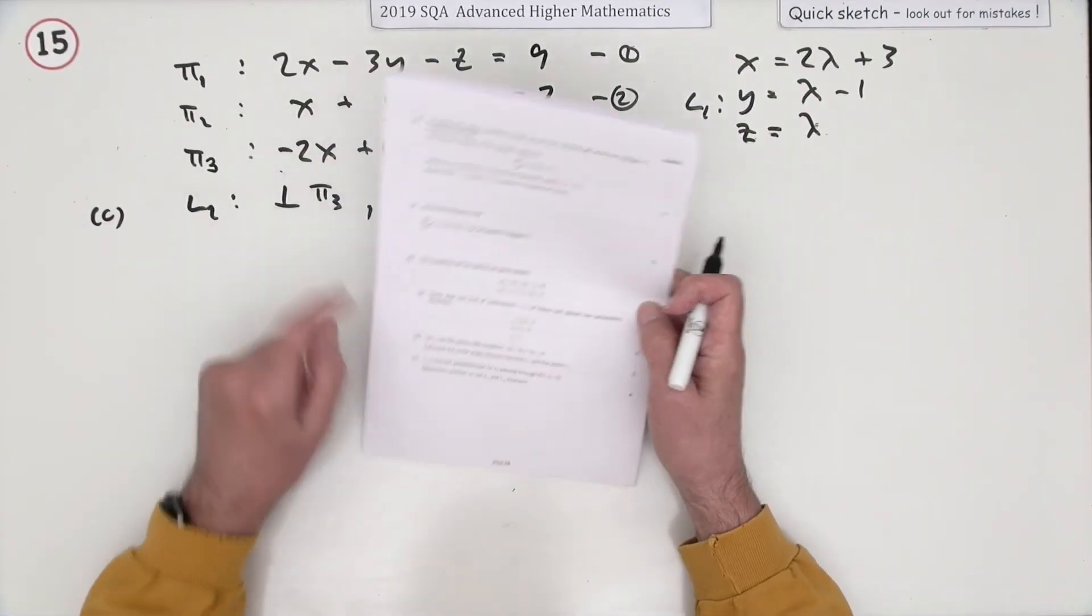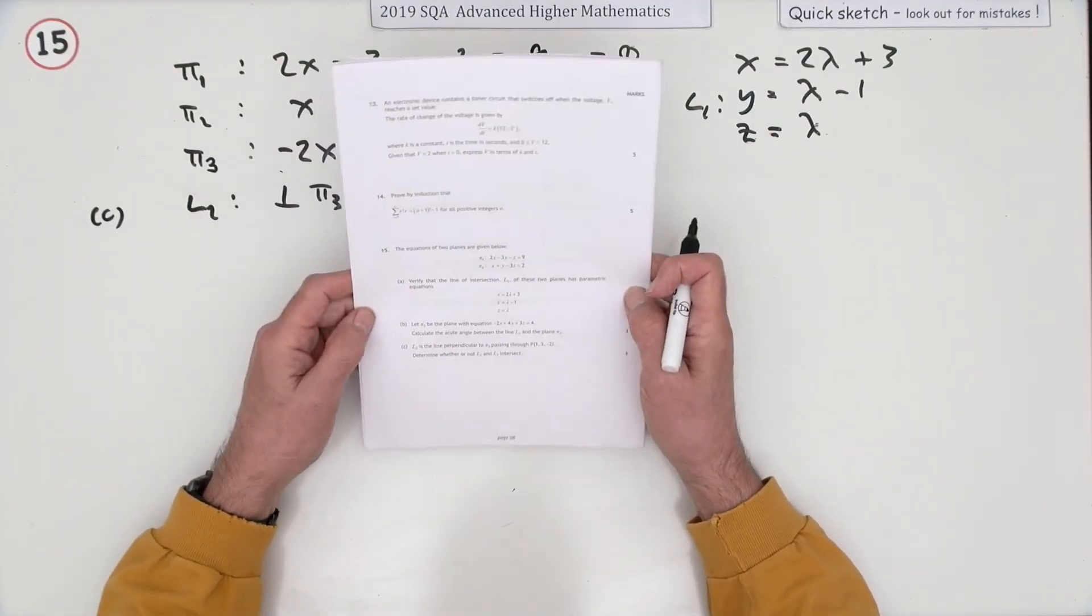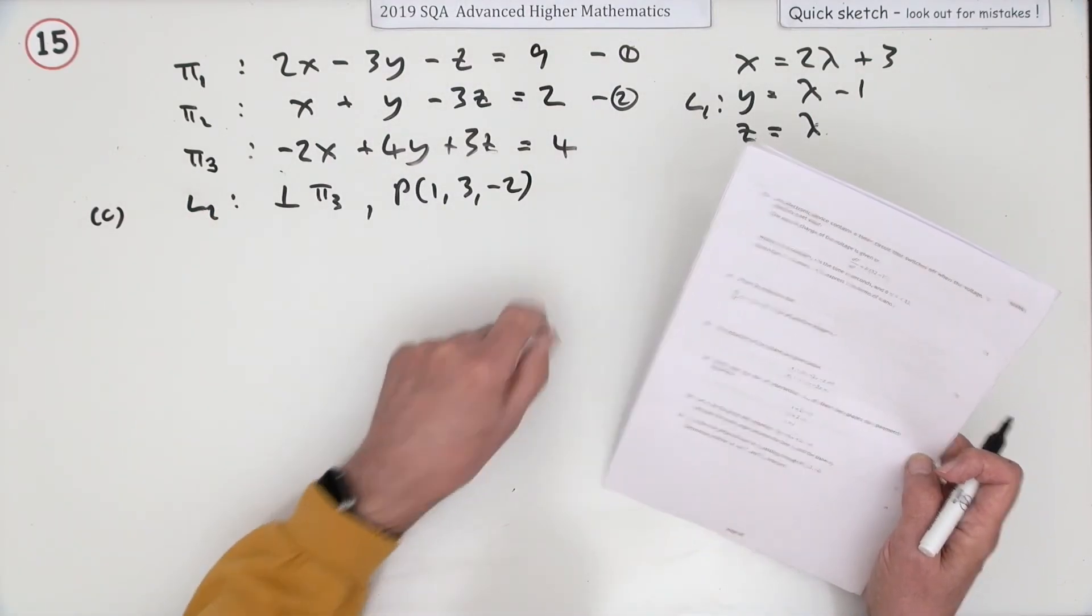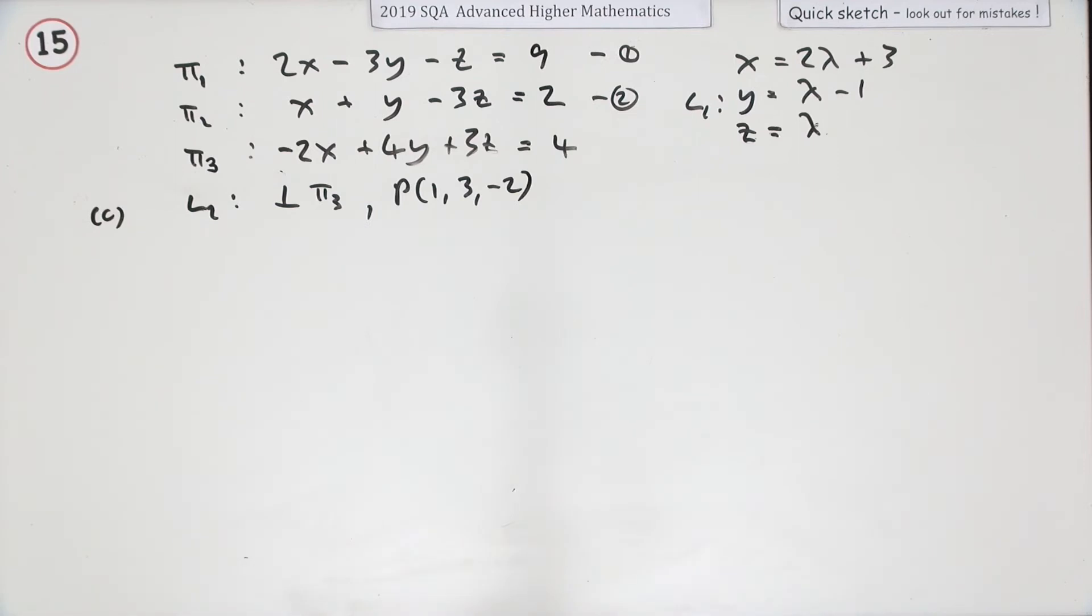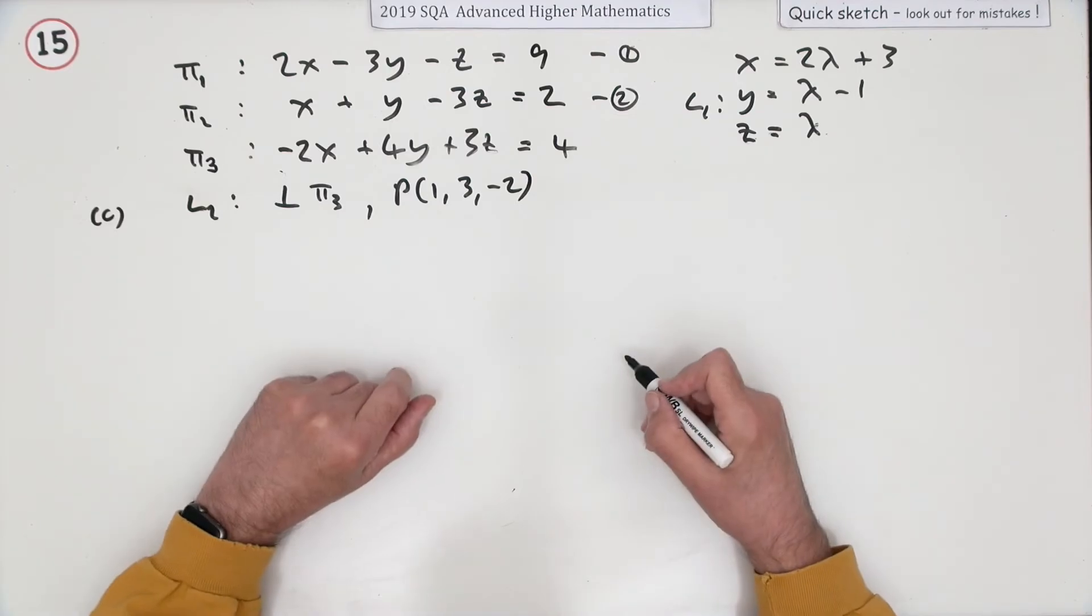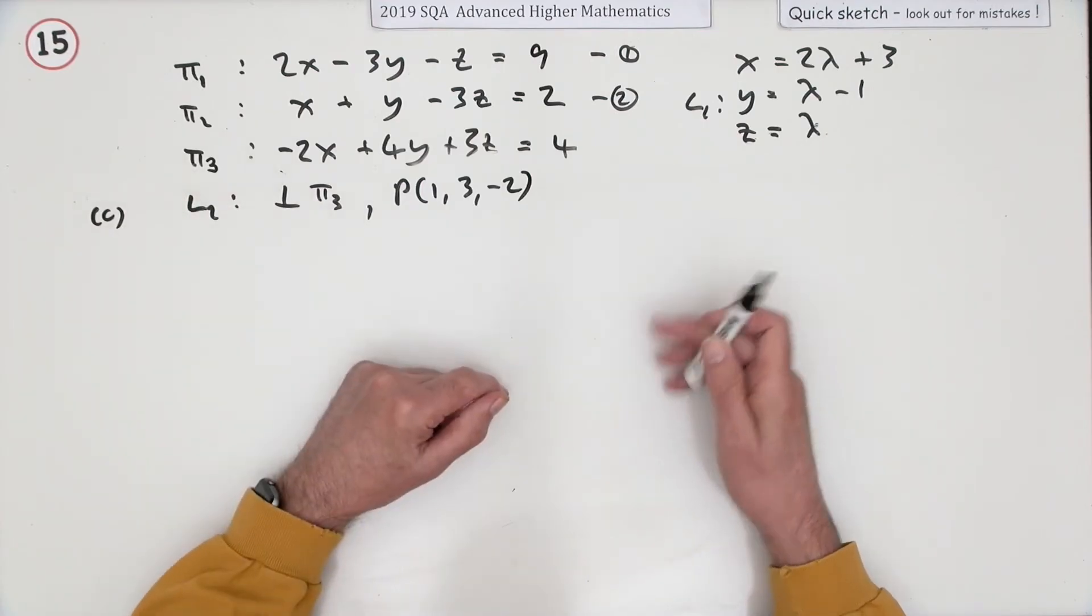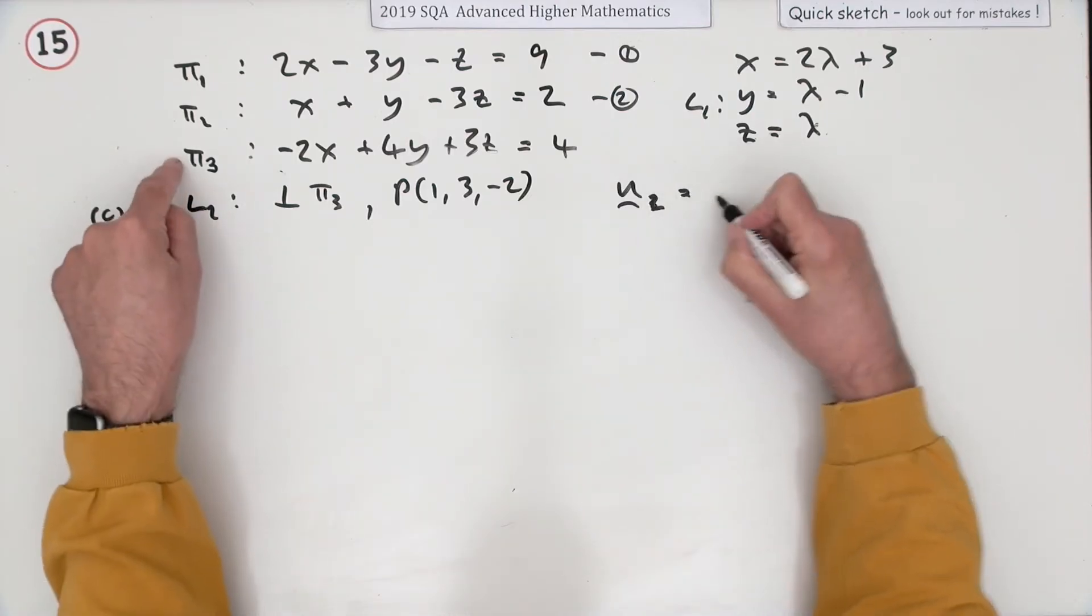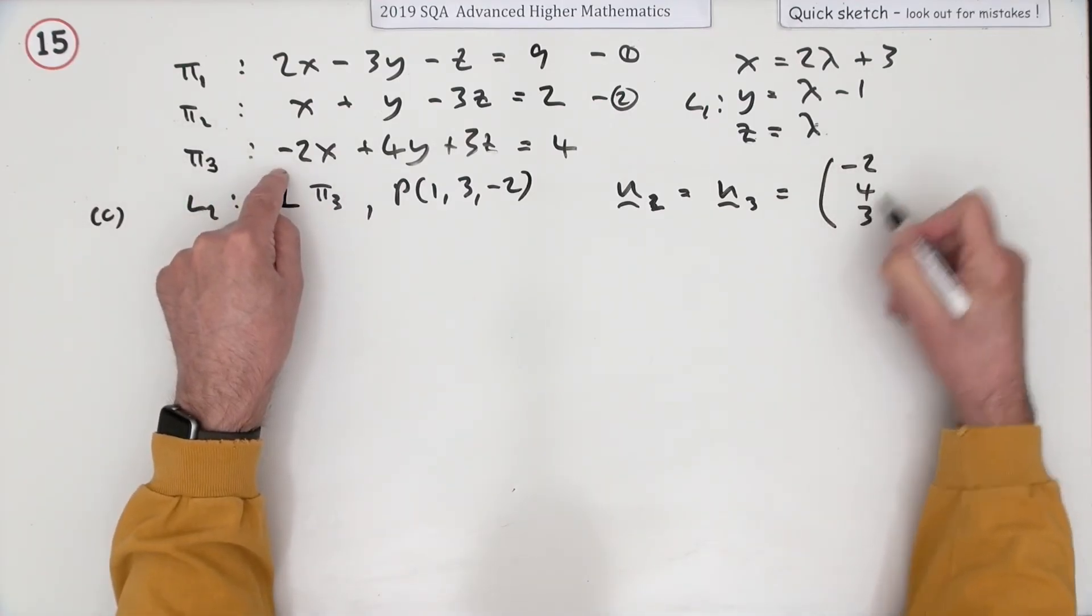Part C. Line two. So a new element joins the troop of entities here. Is the line perpendicular to π3, which passes through the point (1, 3, -2). Now you have to determine whether or not line one and line two intersect. Well, the first thing is I'll need to get the parametric equations of this line. So for this line here, now it's perpendicular to π3. Well that's actually quite handy, because that then means the direction vector of line two is going to be the same as the normal, which you had in the previous part: negative 2, 4, 3.